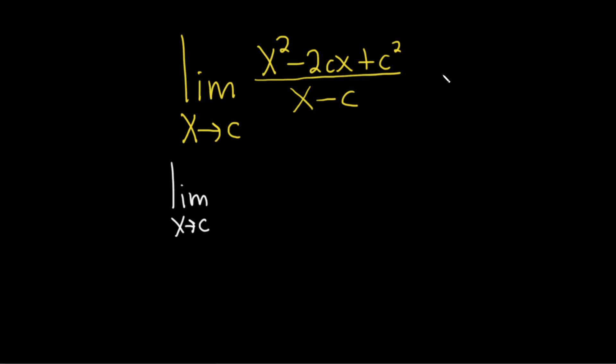But in this case, as you can see here, you end up with c minus c, so you end up with 0 on the bottom. That's why we have to try something else.